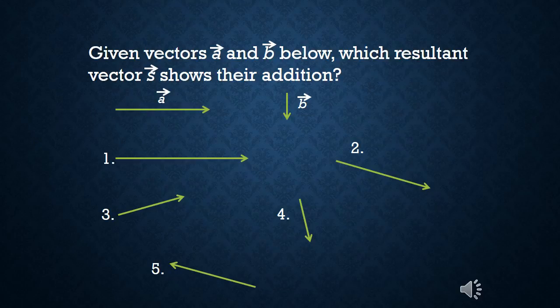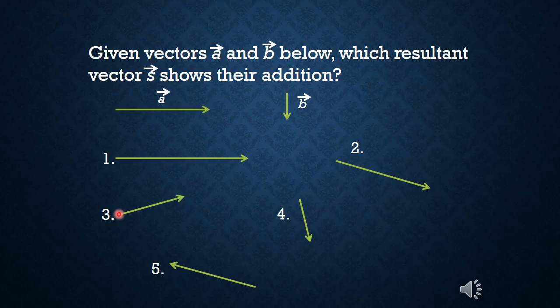Given vectors A and B below — A is a horizontal vector and B is a shorter vertical vector pointing downwards — which of the following, 1, 2, 3, 4, or 5, shows the addition of those two vectors?